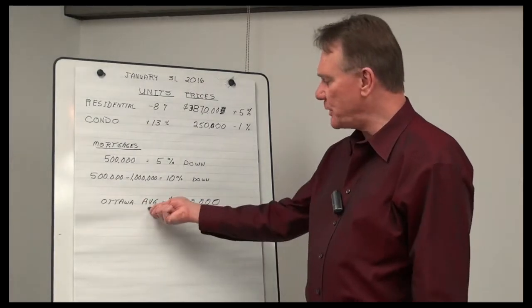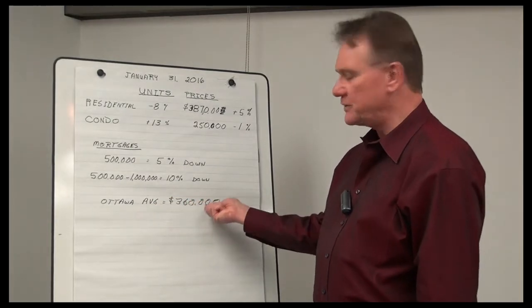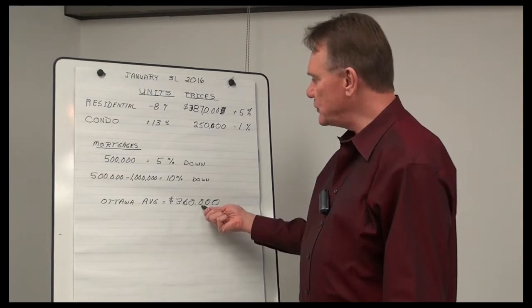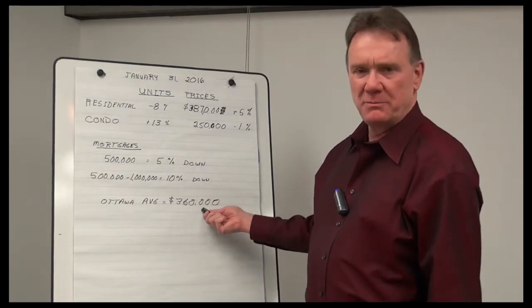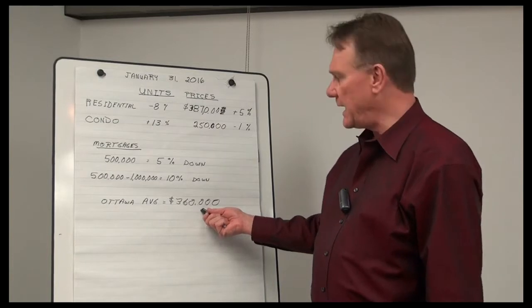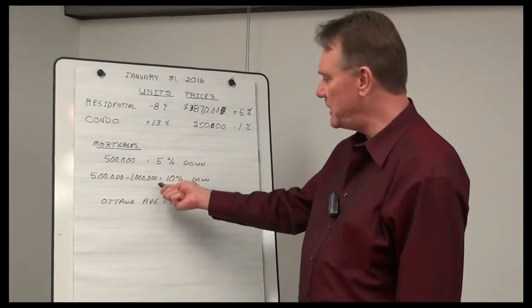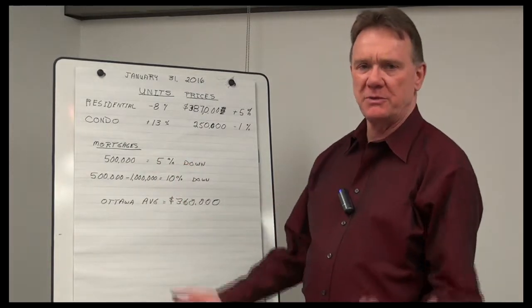When you look at the average price in Ottawa, it's $360,000. That's when you combine the residential and the condo together. So, you can see that this really doesn't impact us whatsoever. And I don't have a whole lot of concern with this. If you've only got a 5% down payment, should you be buying a property that costs a million bucks anyhow?